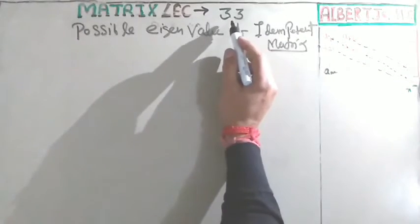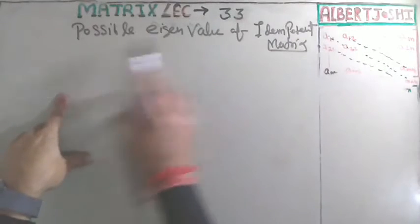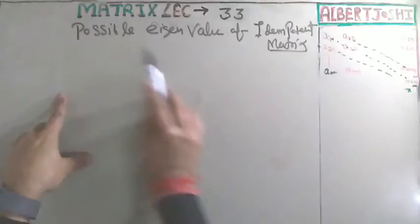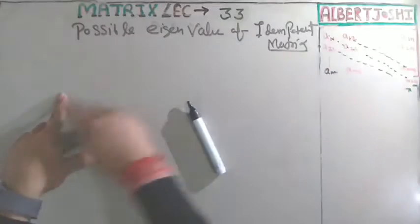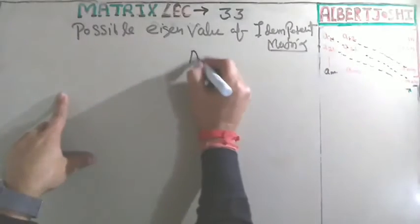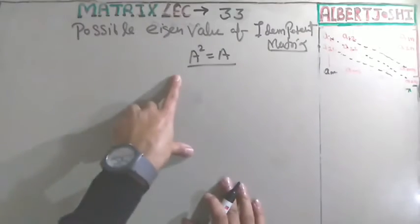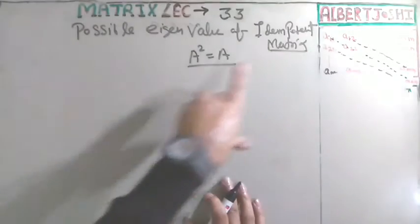Hi friends, this is lecture number 33. Today we are discussing the possible eigenvalues of an idempotent matrix. This is very important. You must go to the previous lecture for what is idempotent. Again, I am writing here: if A² equals A, then this is an idempotent matrix. So what are the possible eigenvalues of an idempotent matrix?